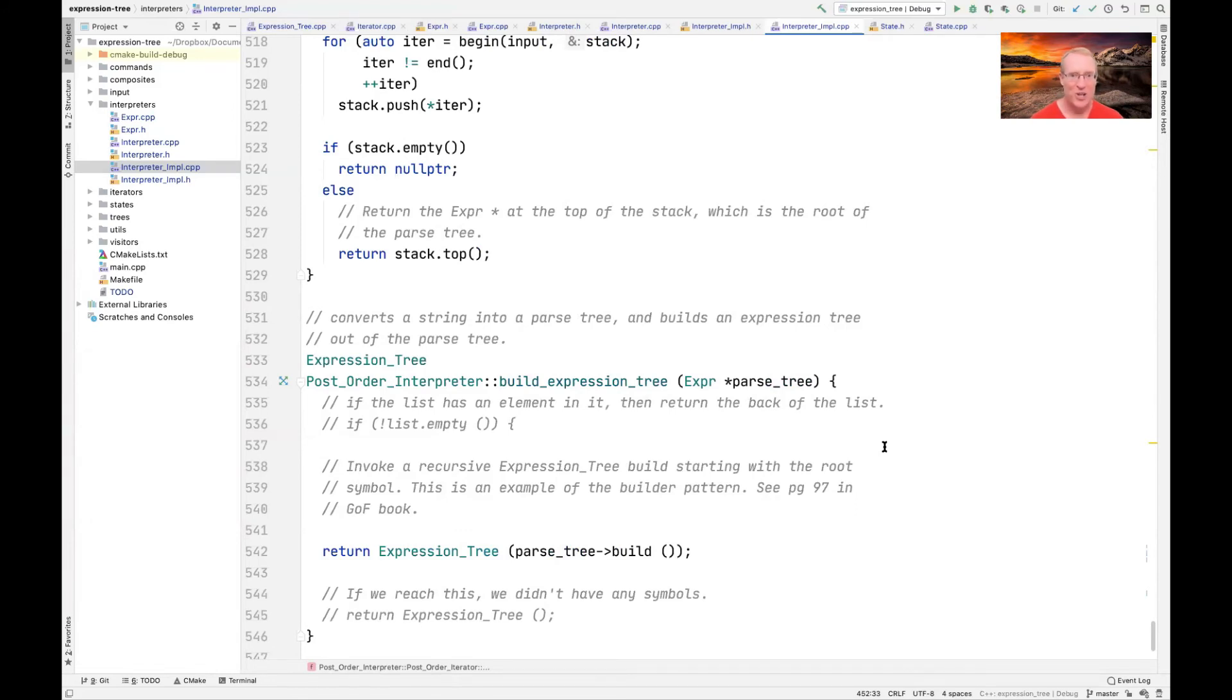So now that we've walked through the implementation at a high level, let's actually take a look at the source code to get the ground truth. You can see here is the build expression tree method we were just talking about, where it says parse tree arrow build, and that kicks all the pieces in motion.